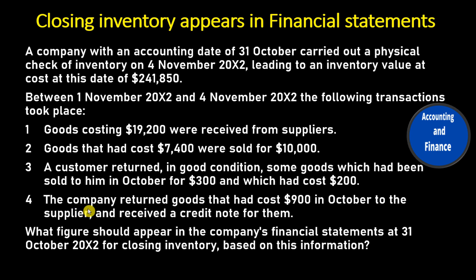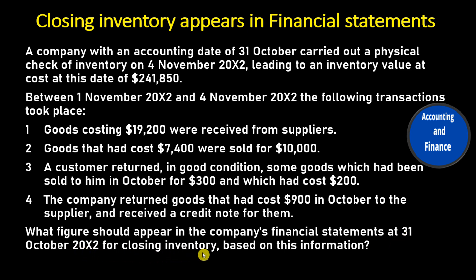4. The company returned goods that had cost $900 in October to the supplier and received a credit note for them. What figure should appear in the company's financial statements at 31 October 20X2 for closing inventory based on this information?